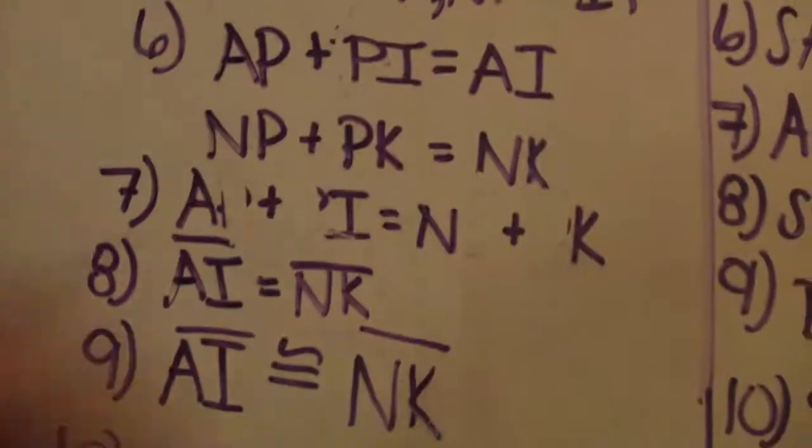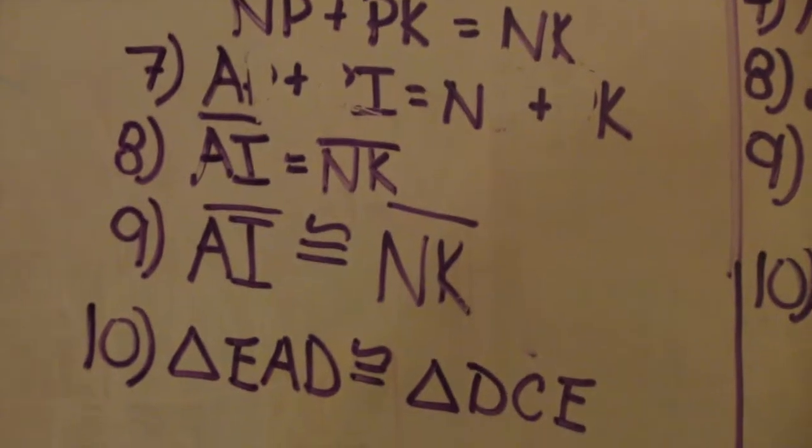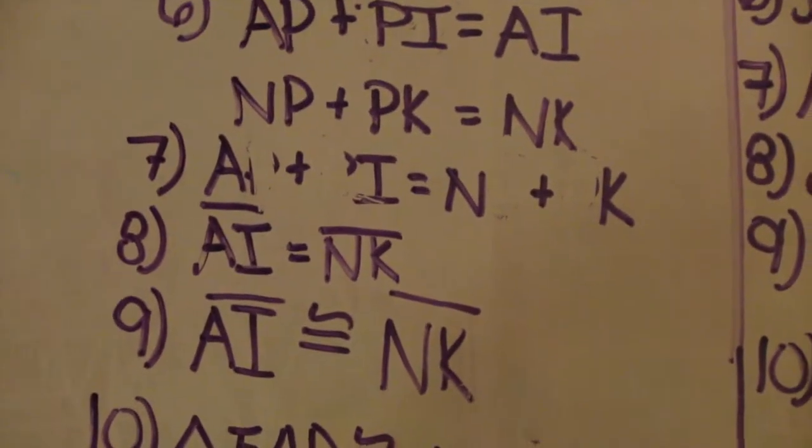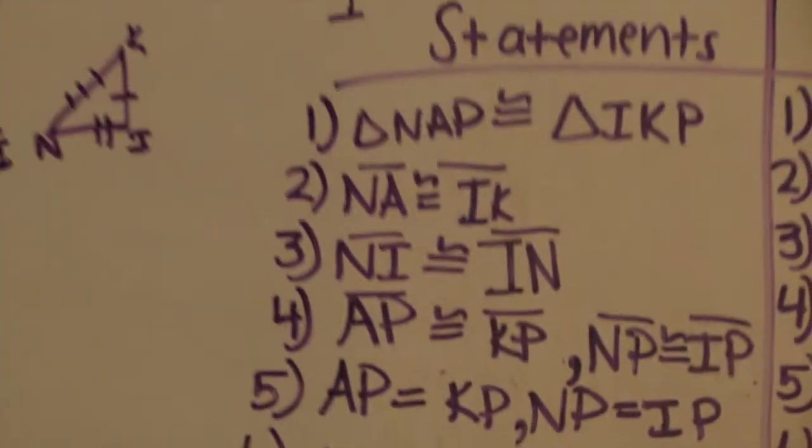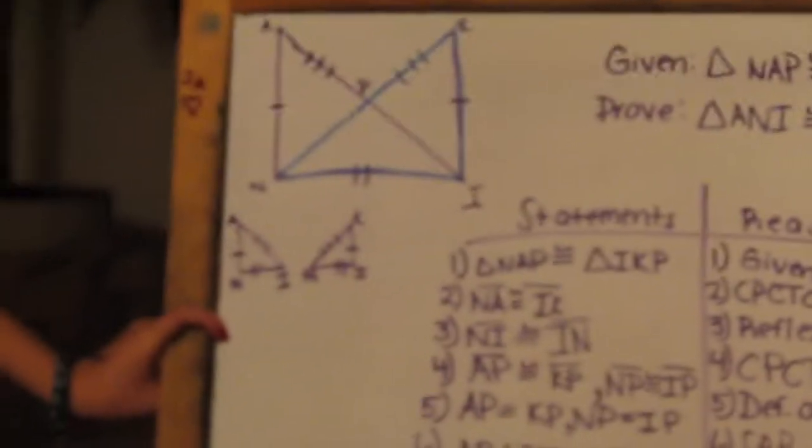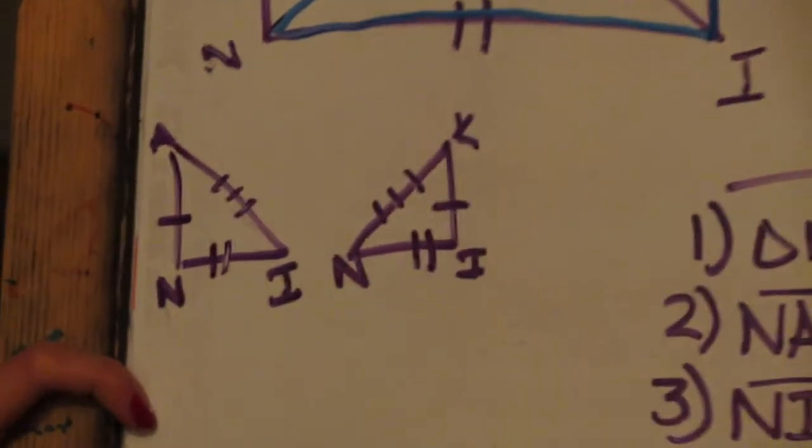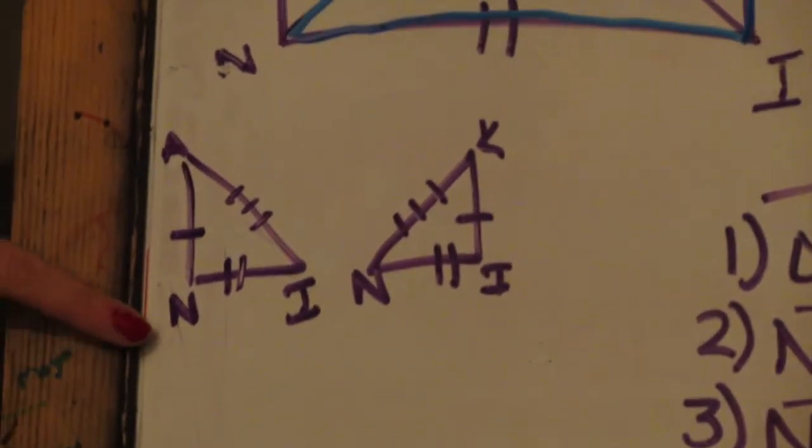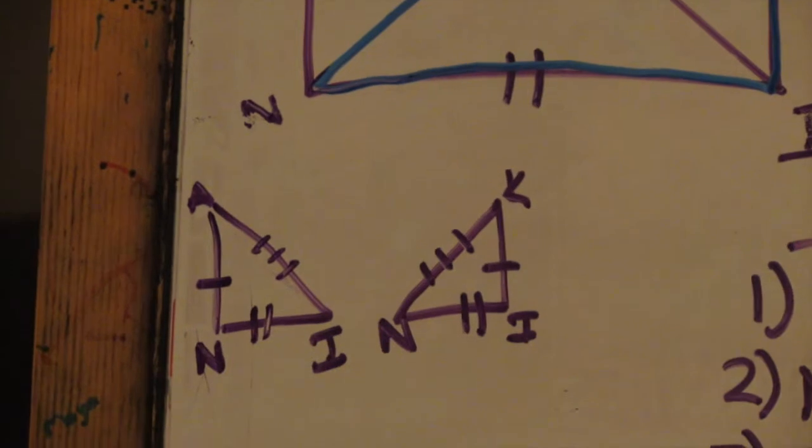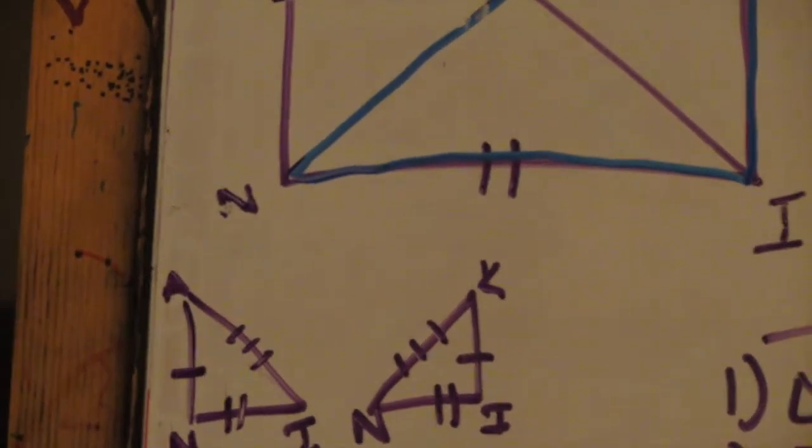And then you just definition of congruent segments again and change it into a congruent sign. Because then you could say that it is SSS with the side, side, and side here. And it's always helpful to redraw your triangles when you're doing overlapping triangle proofs. Because then you can actually see the separate triangles themselves. And this is SSS. And that's all for today.